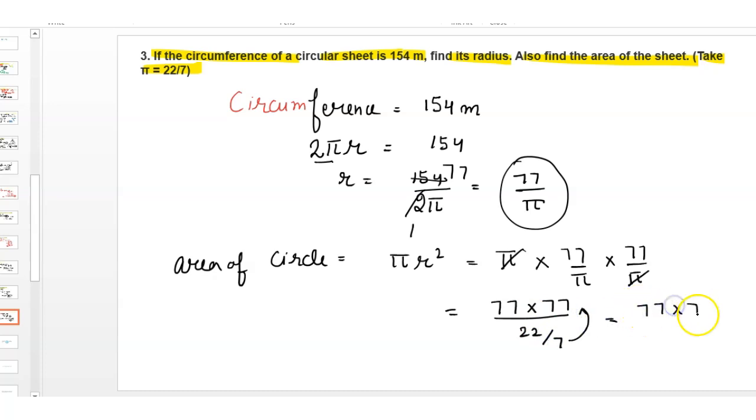Value of π is 22 upon 7, and this 7 goes to the numerator. Then 77 times 77 times 7 divided by 22. 11 twos are 22, 11 sevens are 77. Then here 7, 7, 7, then 7373 upon 2.